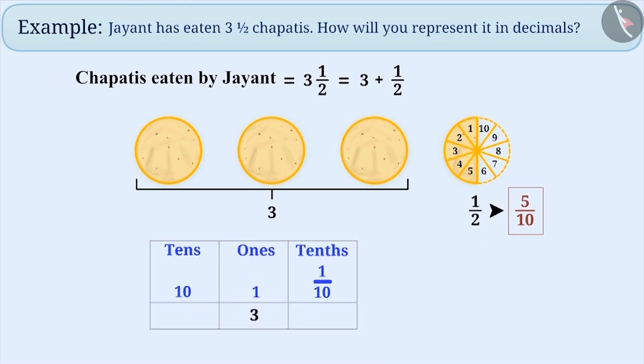Can you tell how we will represent 3 ones and 5 tenths in decimal form? Think for a while. Let me tell you, 3 ones and 5 tenths will be represented in decimal form as 3.5.